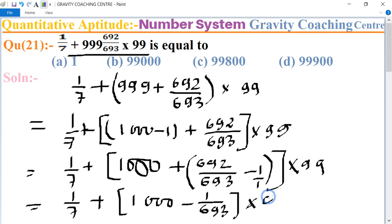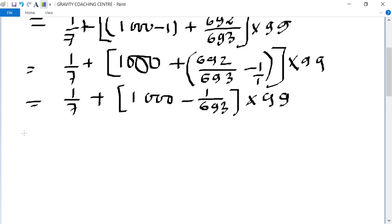Multiply 99. Now we multiply 99 with both the numbers, so this one will become 99 thousand minus 99 upon 693.